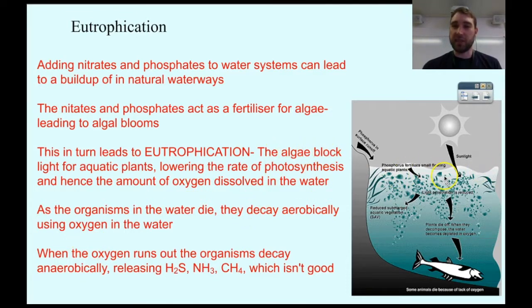What happens is the algae block out the sunlight. So sunlight can't reach deeper into the waterways, and that means any plants that are photosynthesizing down the bottom of the waterway can't do that anymore. If they're not photosynthesizing, they're not producing oxygen, and that reduces the amount of oxygen available in the waterway.